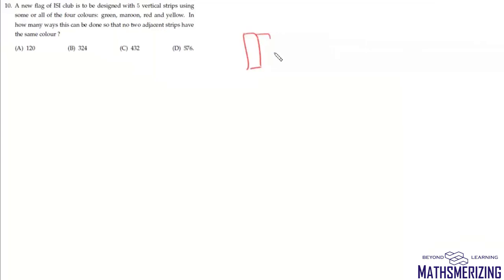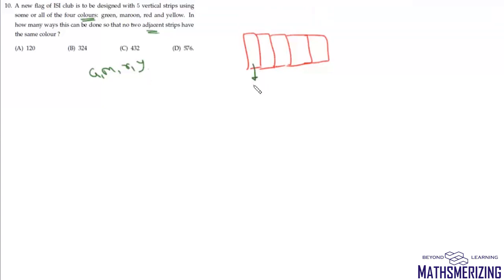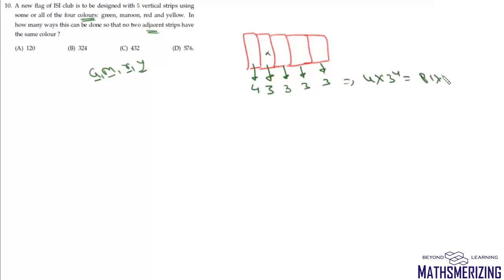Question 10: design a flag with 5 vertical strips using 4 colors (green, maroon, red, yellow) such that no two adjacent strips share the same color. The first strip has 4 choices; each subsequent strip has 3 choices (any color except the previous). Total = 4 × 3⁴ = 4 × 81 = 324. That's option B.